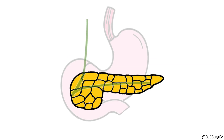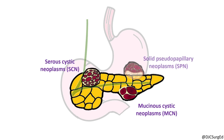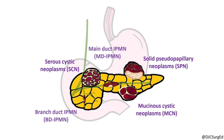Pancreatic cystic neoplasms account for up to 50% of pancreatic cysts and are increasingly found on cross-sectional imaging. There are four subtypes with varying malignant potential: serous cystic neoplasms, mucinous cystic neoplasms, solid pseudopapillary neoplasms, and intraductal papillary mucinous neoplasms.